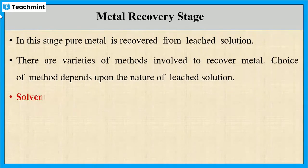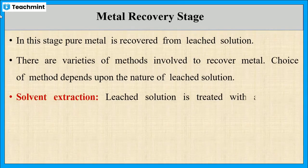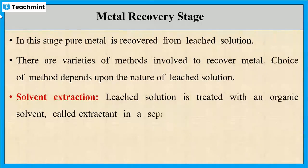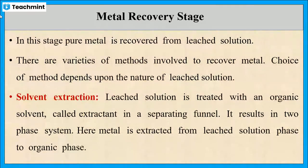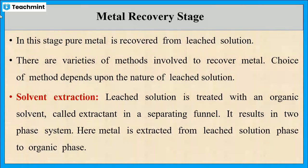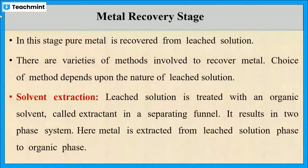The first method is solvent extraction. In this method, the leached solution is taken in a separating funnel and treated with an organic solvent, which results in a two-phase system. The metal is extracted into the organic phase, which is then separated to recover the metal.